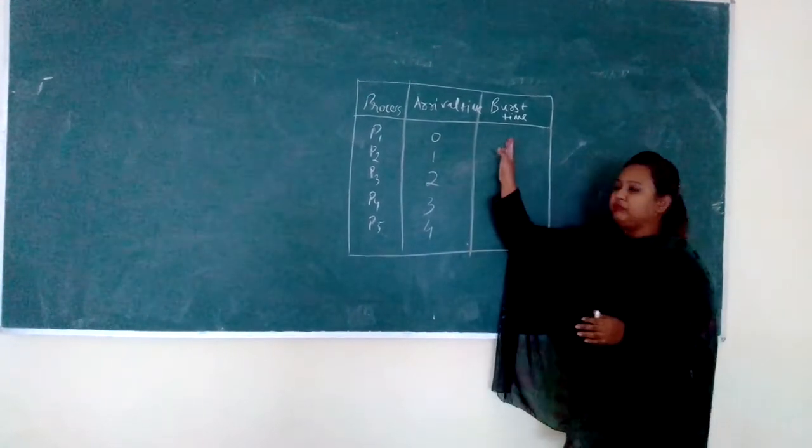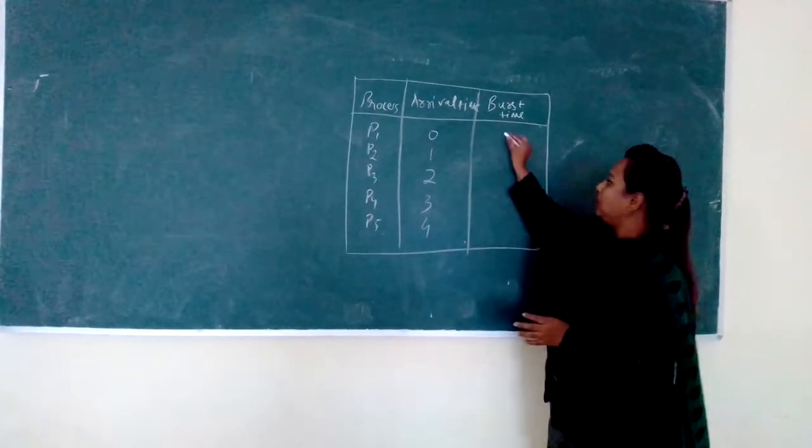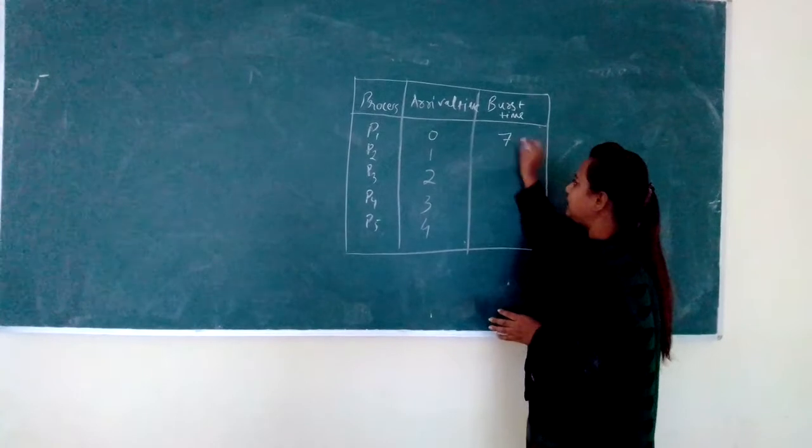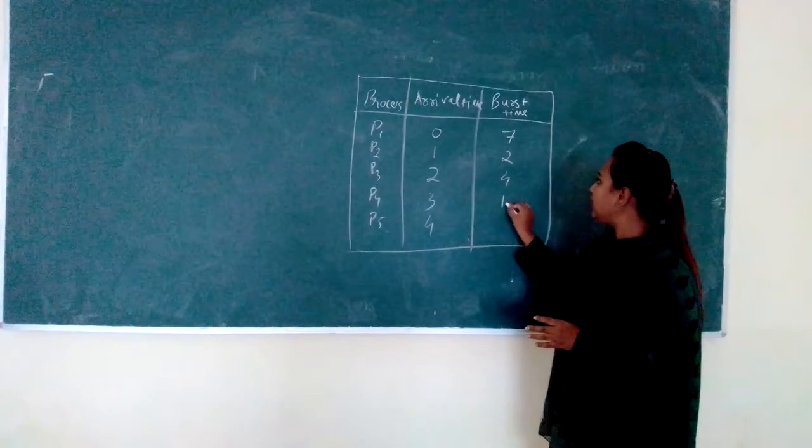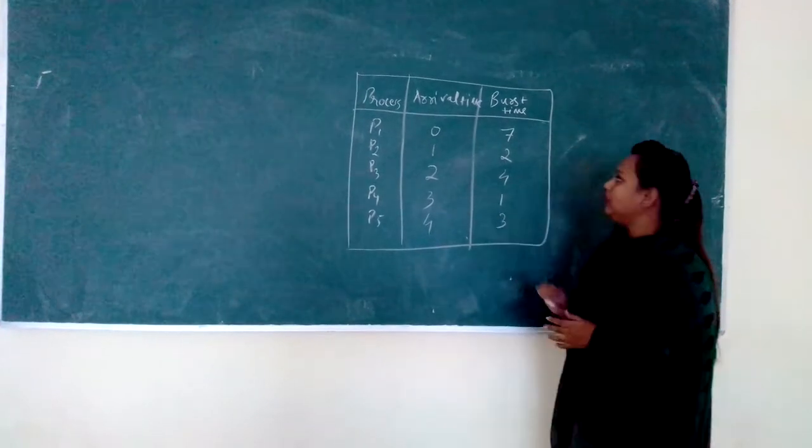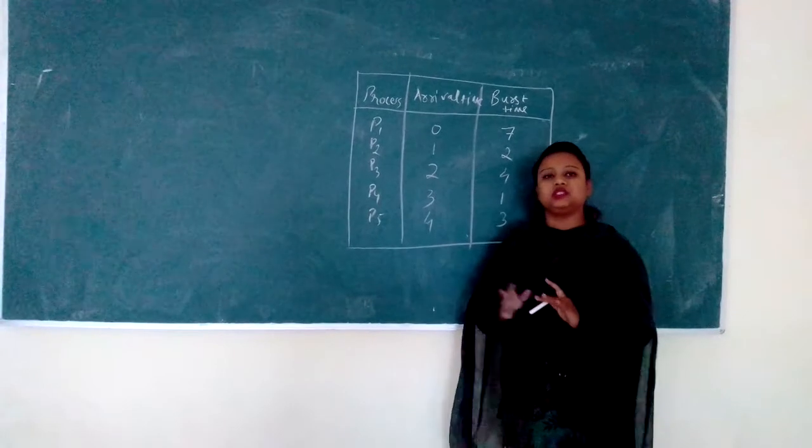Now, in burst times, P1 will execute for how much time can be shown here. Suppose P1 has burst time of 7 seconds, P2 has burst time of 2. This is the particular question which we can understand in shortest job first algorithm.